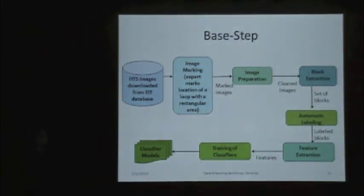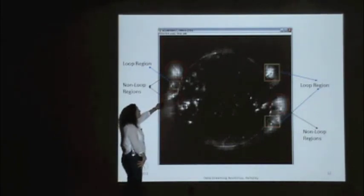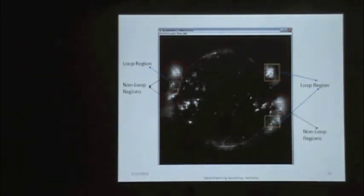To solve the problem, we are applying classical pattern recognition. First, experts are marking the images with coronal loops and locating those regions. After that, we are preparing images. We apply several image cleaning techniques in this phase. We extract blocks around the sun, around the solar disk, and label those blocks as loop or non-loop. Then from those two categories, we extract features and train several classifiers. We get classifier models at the end. Here, those yellow boxes are the expert markings and the other red ones are non-loop regions. So we have to distinguish those two types.